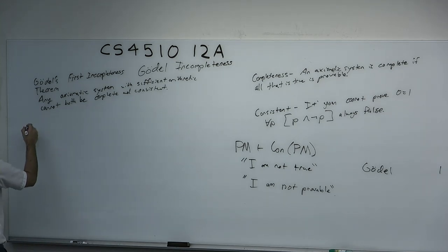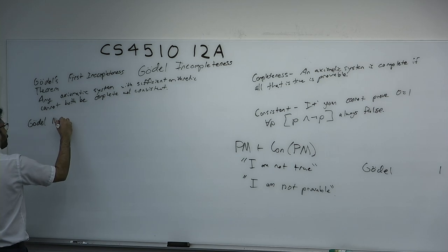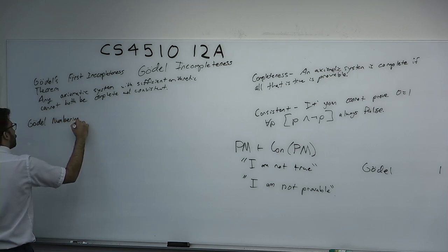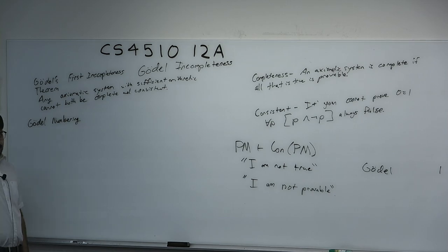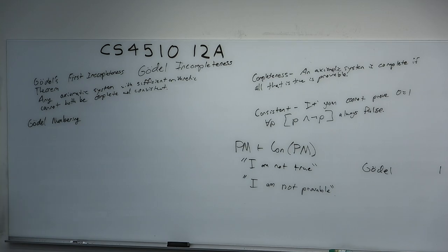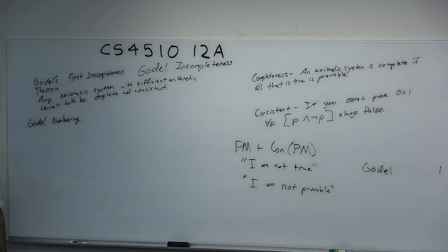Gödel has to come up with what we now call Gödel numbering. We don't talk about this anymore because we know all objects can be represented by strings — we interact with computers daily and everything is a file, a sequence of ones and zeros. This was new to these people at the time, so he comes up with the idea of Gödel numbering.